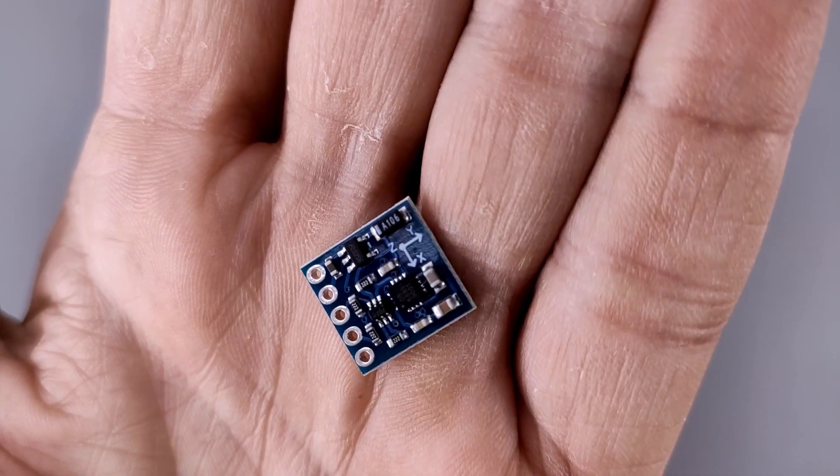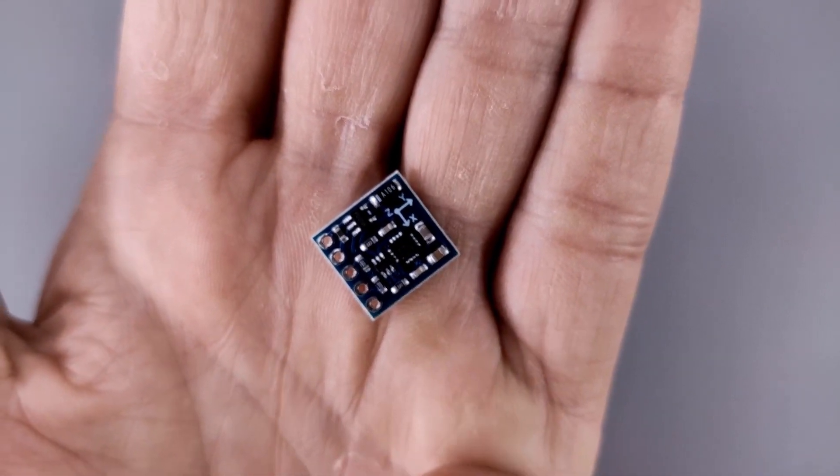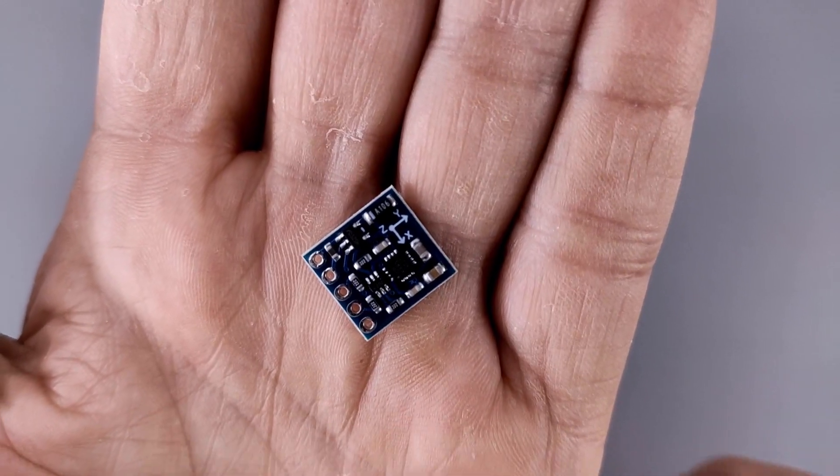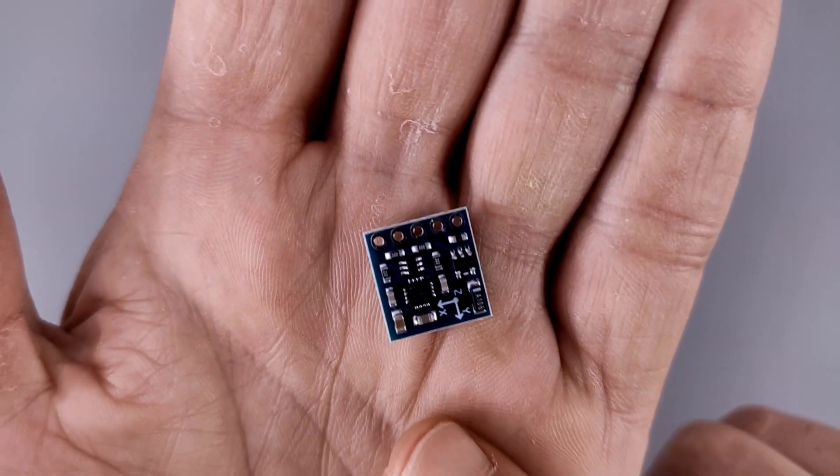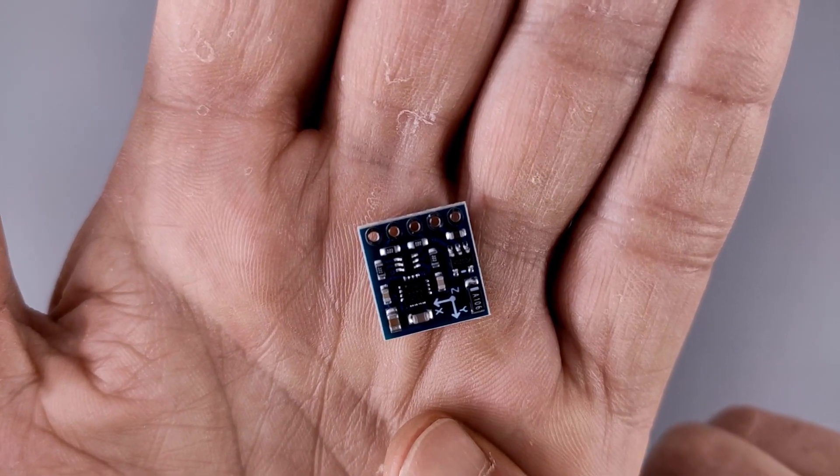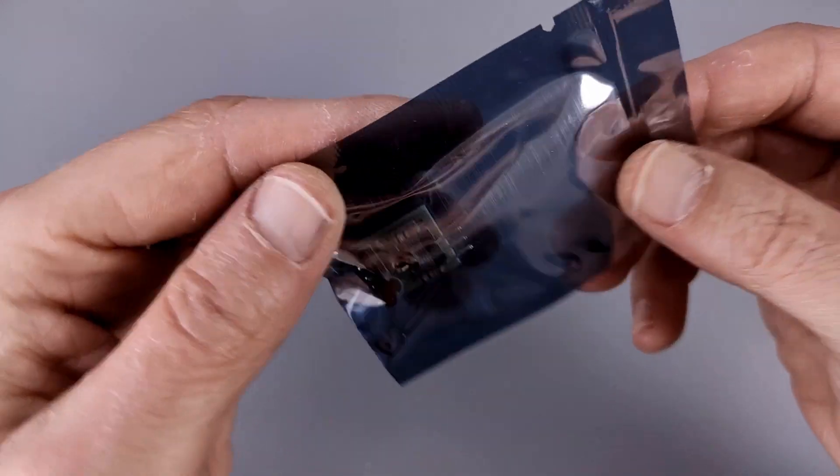I ordered a few and this looks very similar to the one I already have on the breadboard. So I'm thinking this is also the QMC 5883L. The other one I don't recognize.